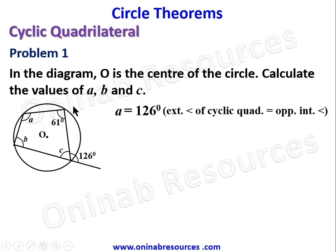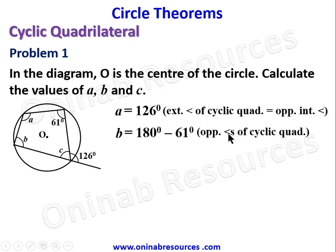For B: B is opposite to 61 degrees, so B plus 61 equals 180 degrees. Therefore B equals 180 minus 61, because opposite angles of a cyclic quadrilateral sum to 180 degrees. This gives B equals 119 degrees.